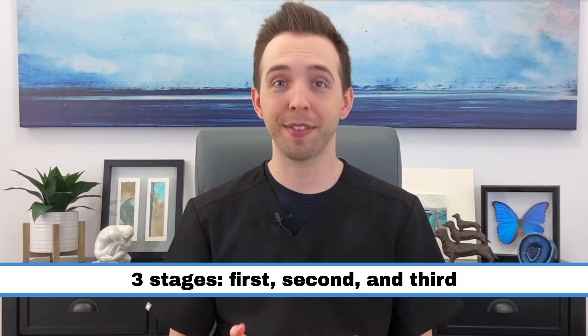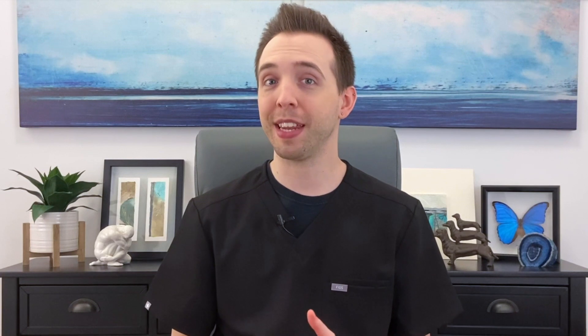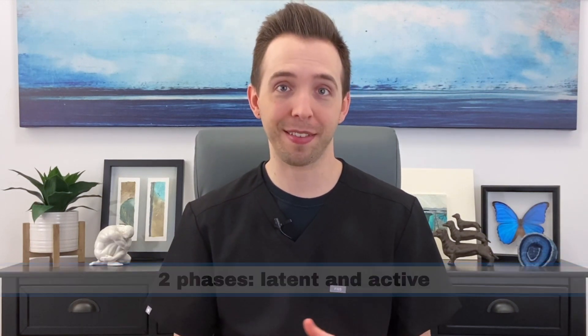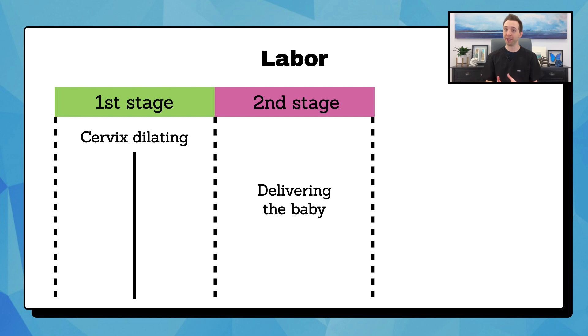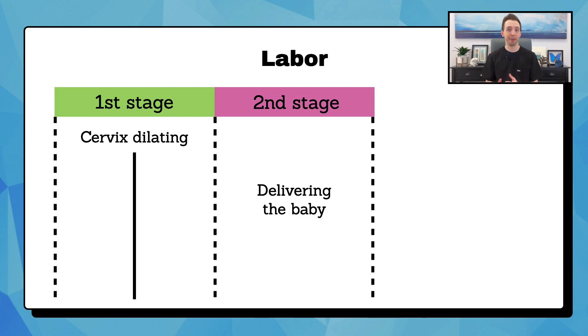Before we can diagnose arrest of labor, we need to learn the normal progression of labor. Labor is divided into three stages: the first, second, and third stage. The first stage is when your cervix is dilating from closed to 10 centimeters. The second stage is when you are pushing to deliver the baby, and the third stage is delivering the placenta.